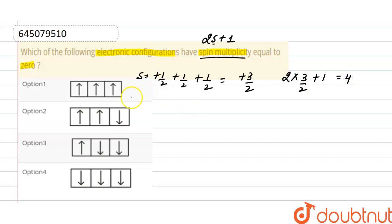So next one, spin here is plus half, plus half, and minus half. So from here spin will be plus 1 by 2. Now spin multiplicity will be 2 into total spin is 1 by 2 plus 1.